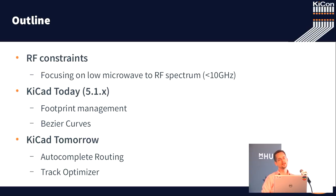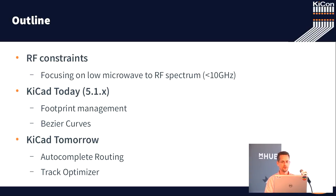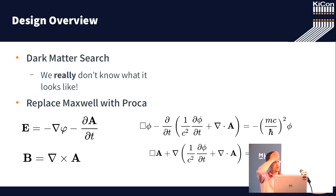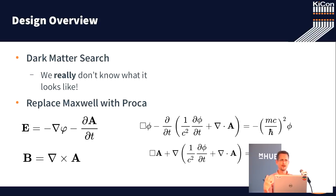And finally, we'll talk a little bit about what KiCAD tomorrow is — meaning when the code review finishes on a couple of patches. So, a quick overview: this is about a circuit I was building for a kind of dark matter search called hidden photons or dark photons. We really, really don't know what dark matter looks like, and it could be anything.